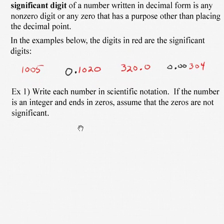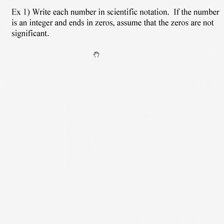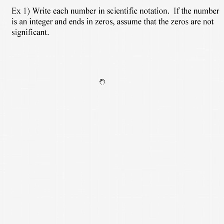Our job today is to go back and forth — take numbers from decimal notation to scientific, and from scientific to decimal. For example 1, write each number in scientific notation. If the number is an integer and ends with zeros, assume in this case that the zeros are not significant.